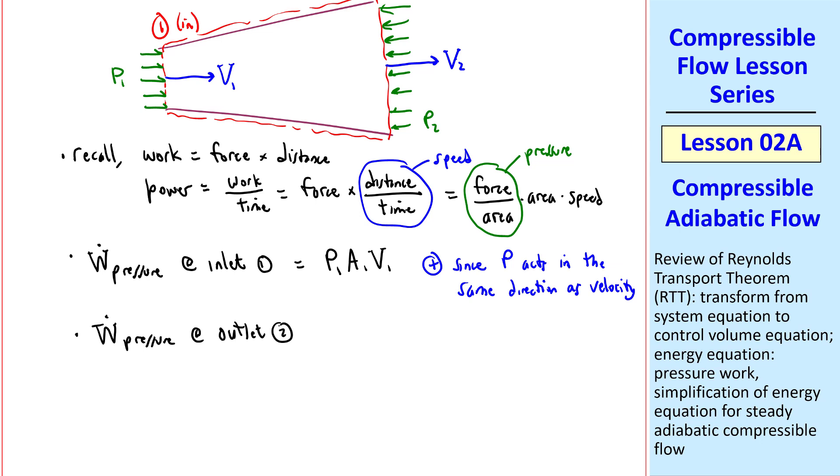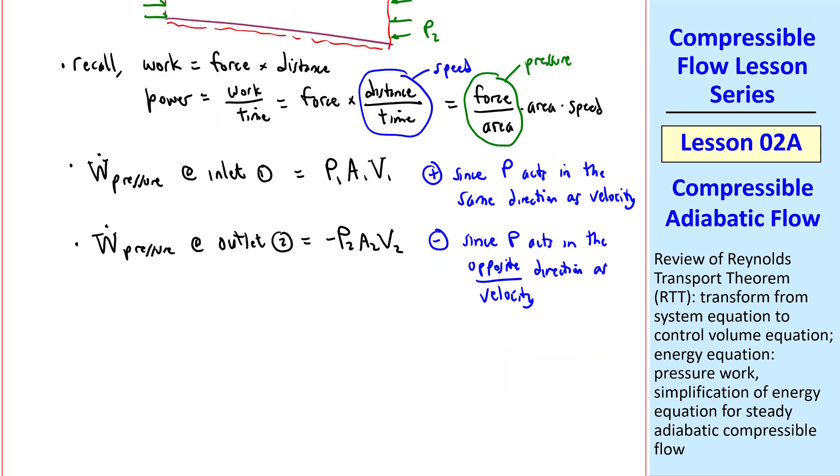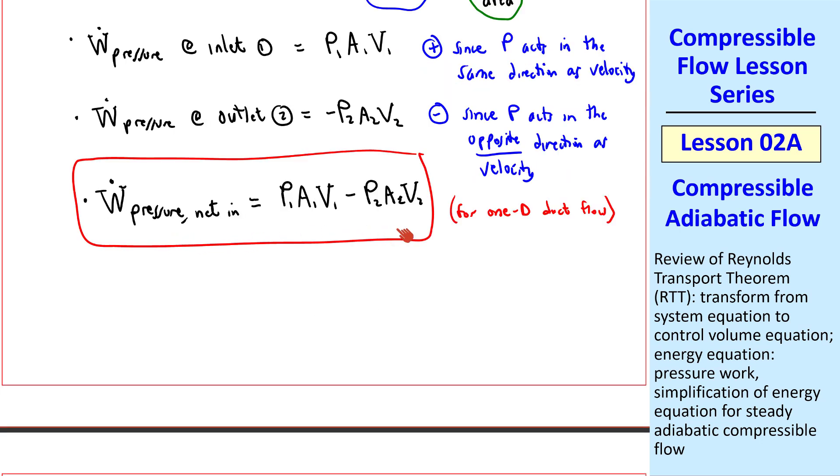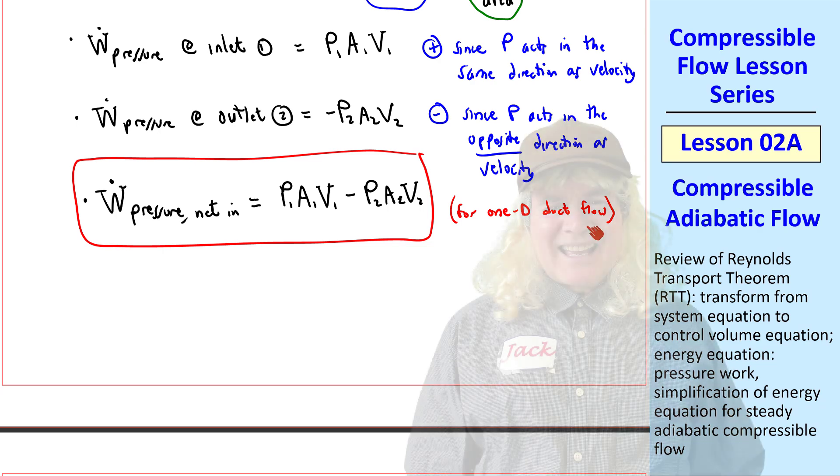Similarly, the pressure work term at the outlet is negative P2, A2, V2, and this term is negative, since P acts in the opposite direction as velocity, as we can clearly see here. And noting that pressure always acts inward normal. Finally, for this simple 1D case, W dot pressure net in is simply the sum of these two, P1, A1, V1, minus P2, A2, V2. This equation applies for one-dimensional duct flow.